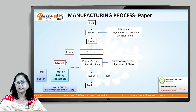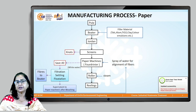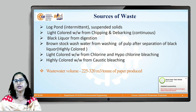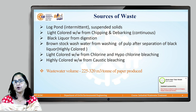In paper manufacturing, not much water is used — water is mainly used to align the fibers. The water collected from this process is taken to a unit called the save-all, where fibers are separated through filtration, settling, or flotation. The fibers are sent back to the beater machine, while the remaining clean water is reused after chlorination.